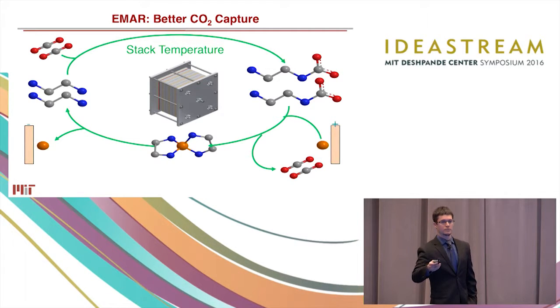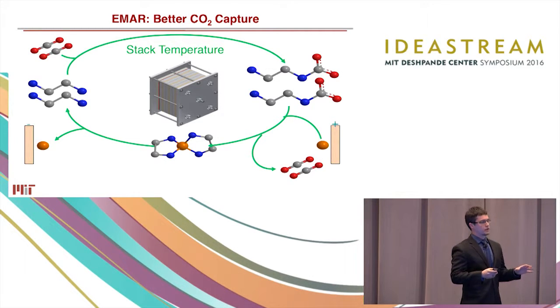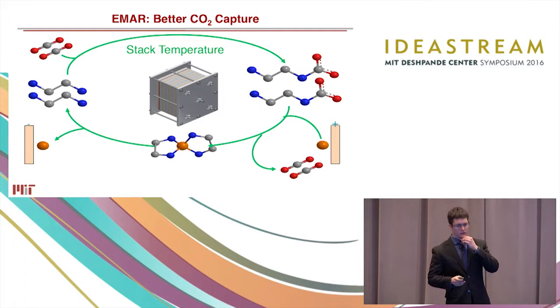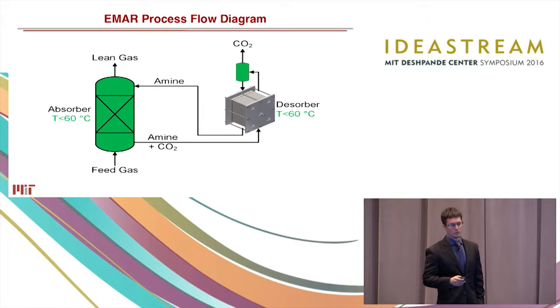So the amines grab the copper, they let go of the CO2, we get the CO2 freed up, and then on the other side of the electrochemical cell the copper is removed. So it's worth pointing out that electrochemical means we apply voltage, we need power, but we don't need anything else. So this is a lot more efficient.